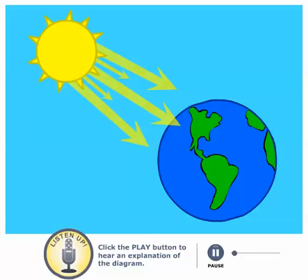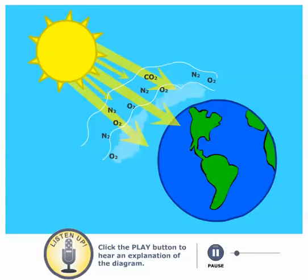All these radiations come in during the morning or daytime without any problem. The atmosphere has various kinds of gases like oxygen, nitrogen, a little bit of carbon dioxide, etc. These radiations basically pass through.